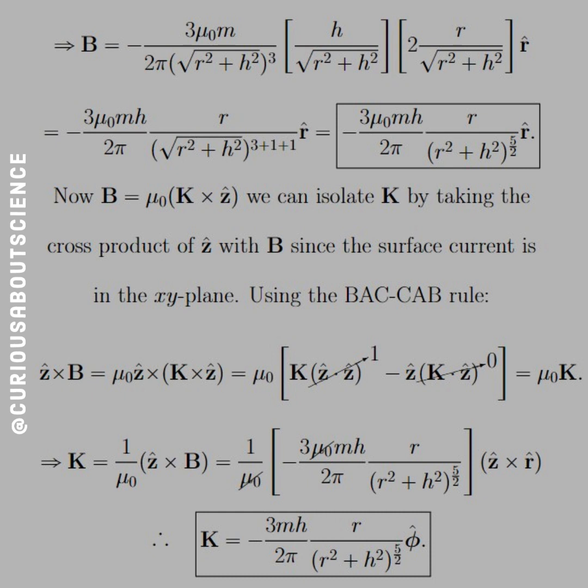We're left with mu naught K. So K is equal to 1 over mu naught z hat cross B. Again, we can power through that. Z cross R hat is equal to phi hat. Again, if we need to break the R hat down to X, Y, and z, then we can reconsolidate later. Cylindrical coordinates also help here, so be aware that that's also an option. And then the mu's cancel, so we are indeed left with negative 3MH over 2 pi R over R squared plus H squared to the 5 halves in the phi hat direction, and we are done.